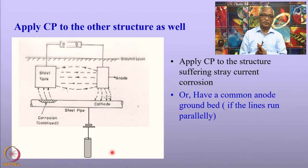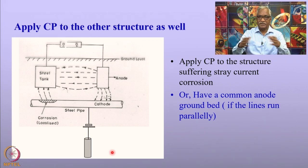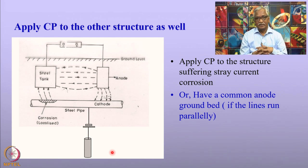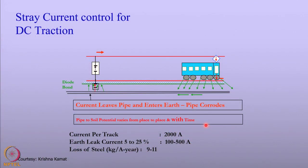Another effective way of controlling stray current corrosion is to relocate the anode ground bed. If pipelines are traveling parallel to each other, it is possible to relocate the anode ground bed far away from the intended pipelines, making the stray current entering the foreign line minimal. We have seen earlier that stray current corrosion in the DC traction system is very severe and requires control to prevent rapid corrosion. This is done using almost all the principles discussed so far.